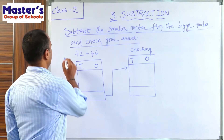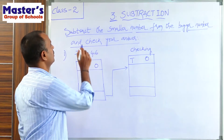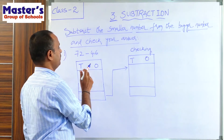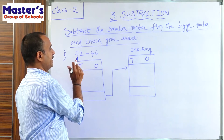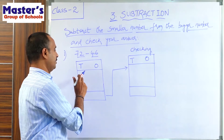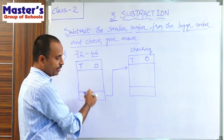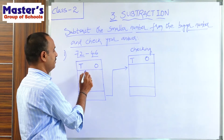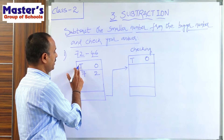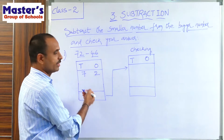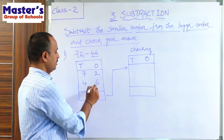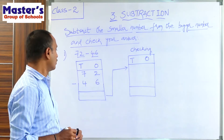Let us practice one more problem on checking subtraction. The given example is 72 minus 46. First subtract the smaller number from the bigger number. 72 is the bigger number and 46 is the smaller number. Write the bigger number first and the smaller number below it: write 2 in the 1's place and 7 in the 10's place for 72, and 6 in the 1's place and 4 in the 10's place for 46.